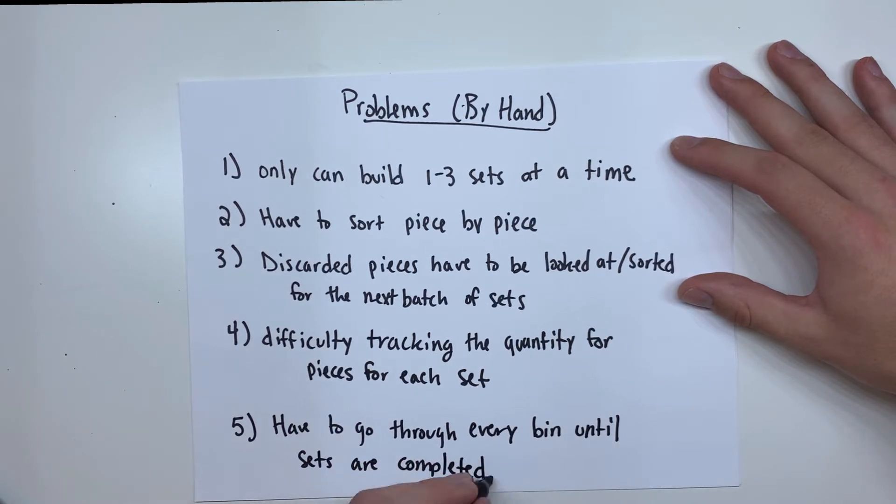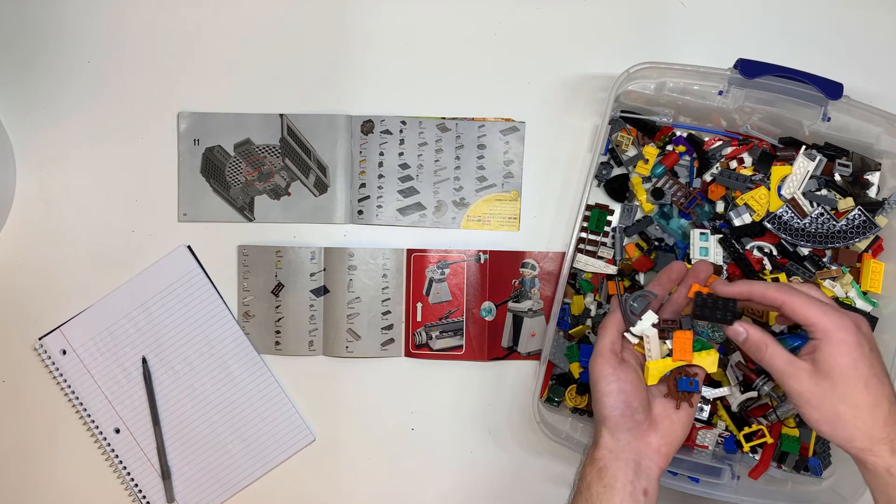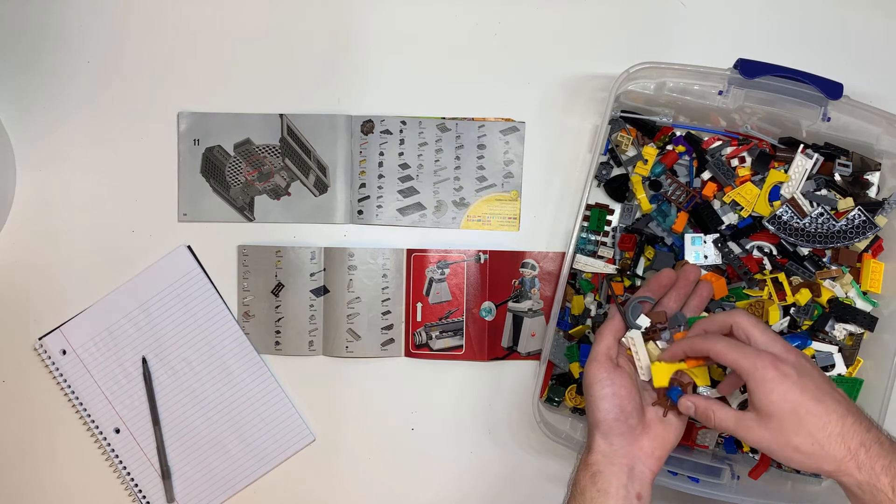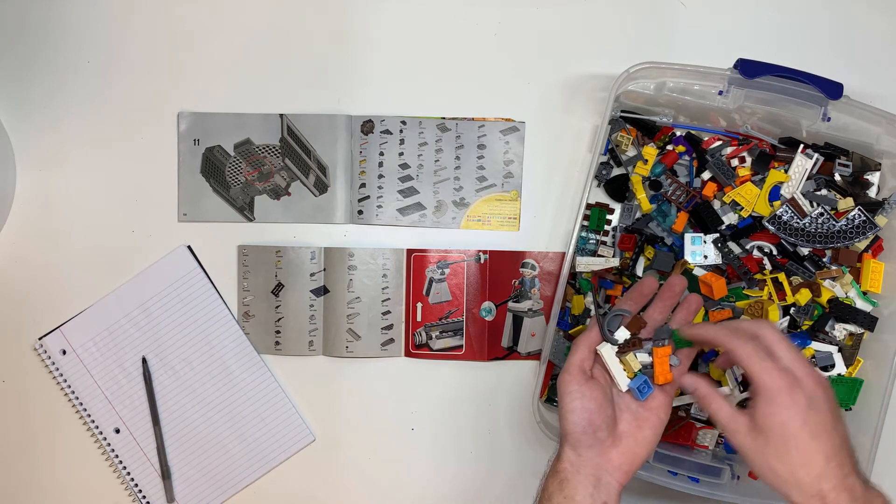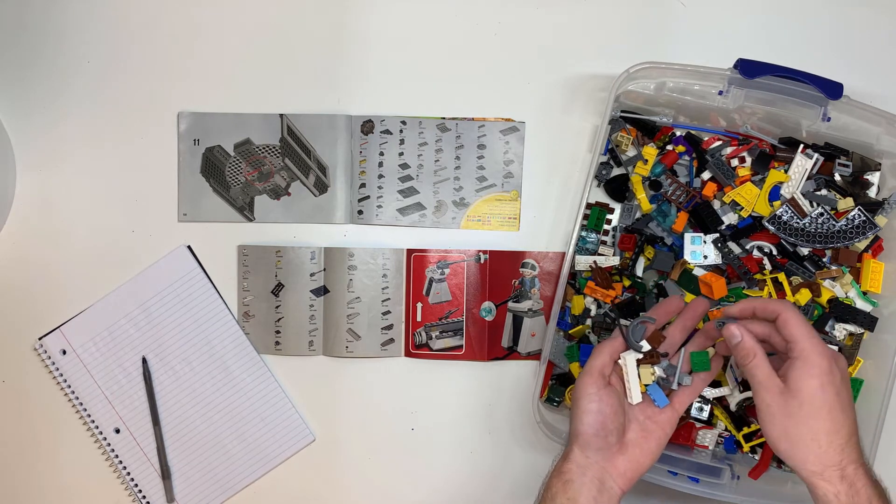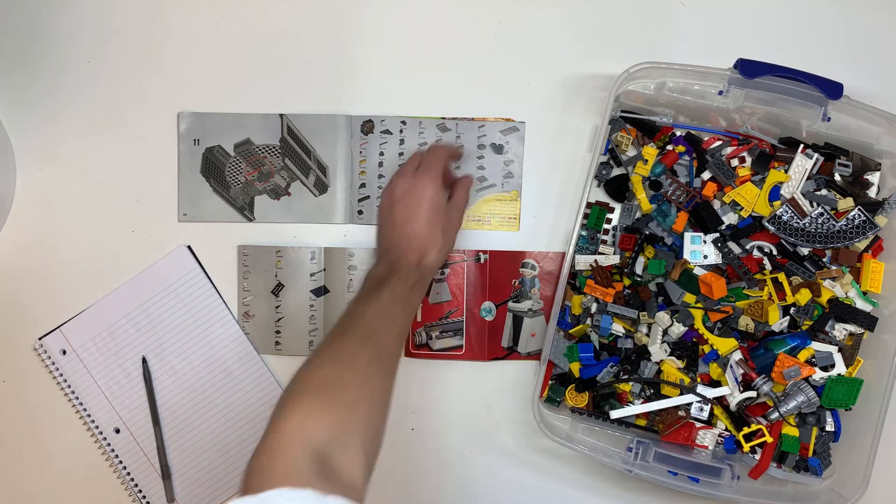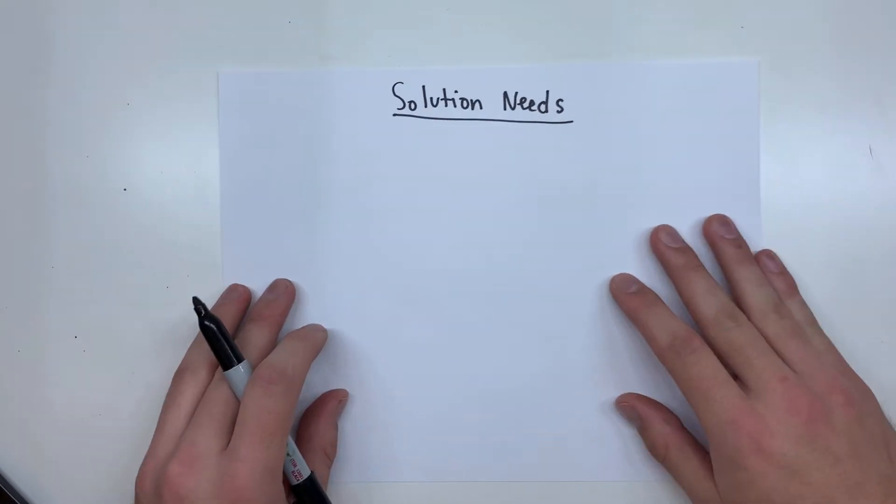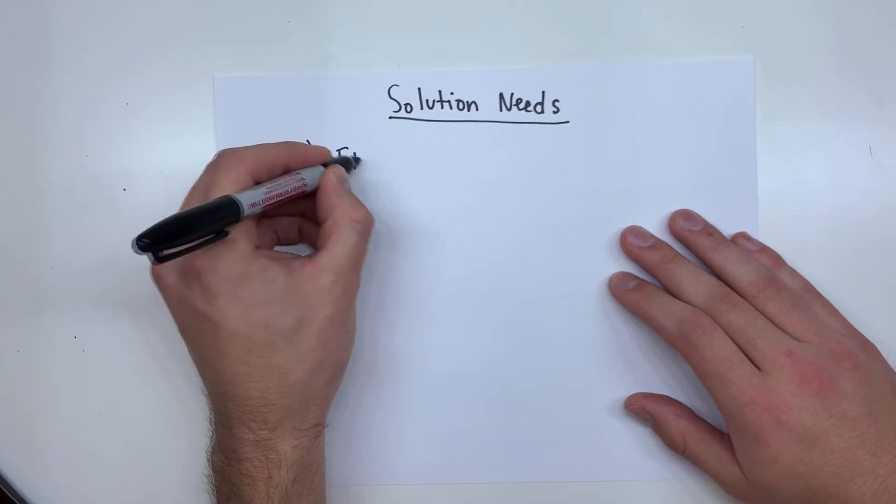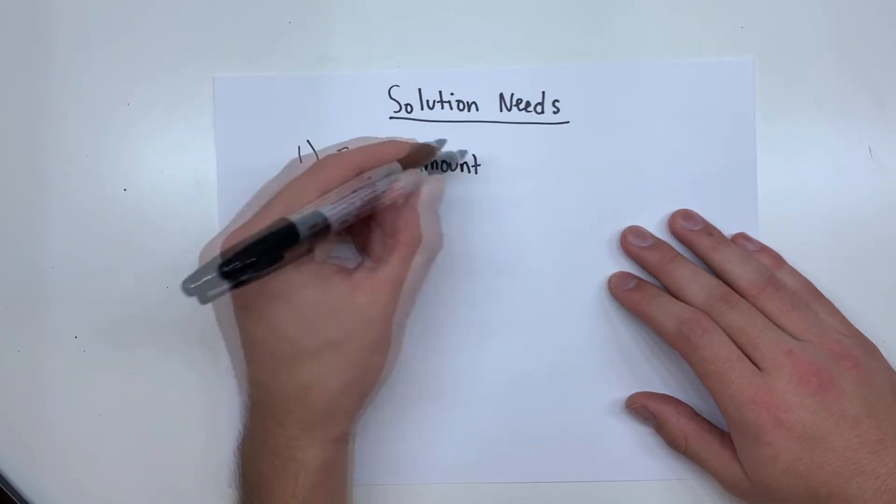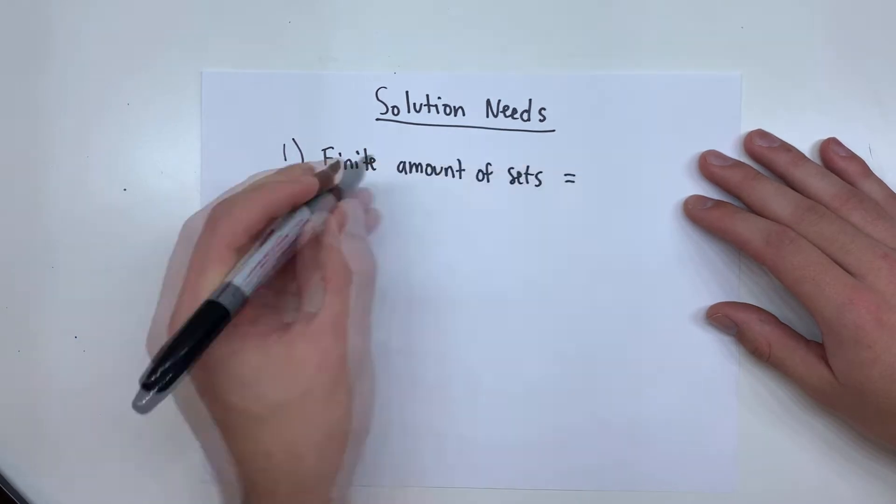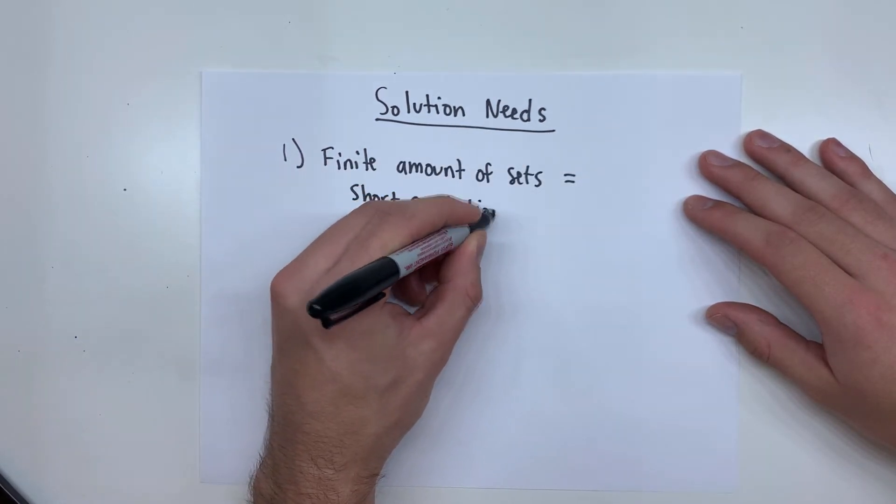I have seen people online create a variety of LEGO programs and automatic sorters, probably the most popular ones being the AI recognition and sorting systems. The problem with these projects is that they don't really apply to my situation. We don't buy LEGOs anymore, so there's a finite amount of LEGO sets that need to be rebuilt, so the project is going to have a relatively short lifespan.